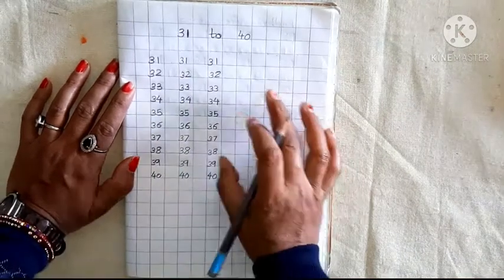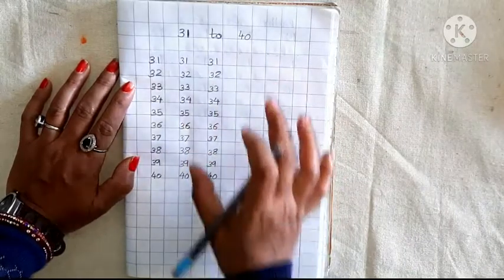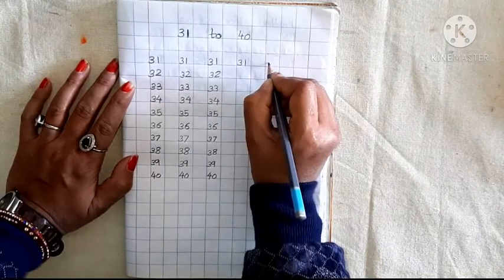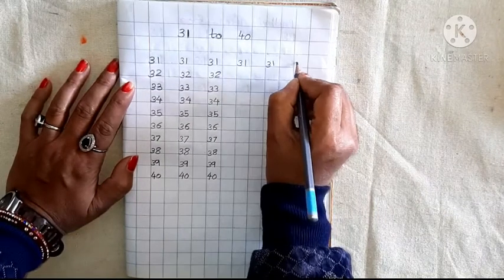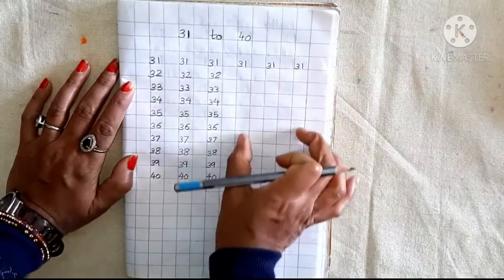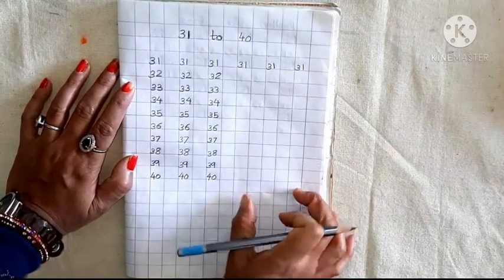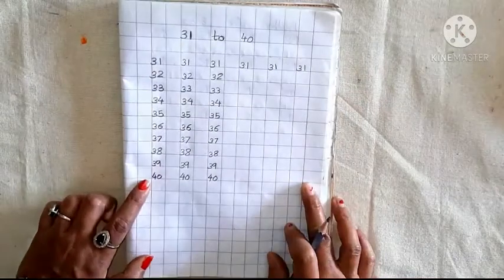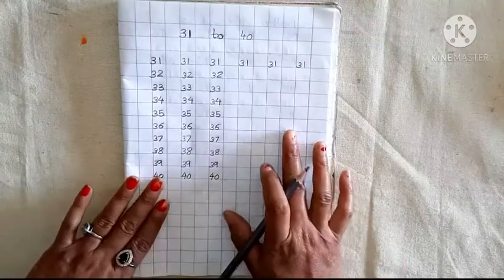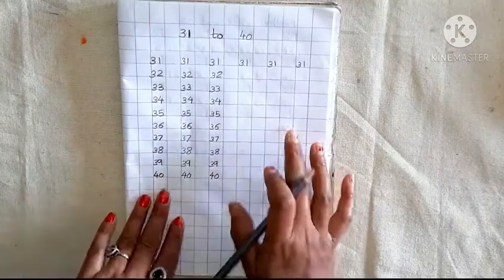मैडम ने कैसे लिखा? वैसे ही आपको लिखना है, Okay? मैं यहाँ पर फिर से 3, 1, राइट करती हूँ, देखो. यहाँ पर मैंने 3, 1. राइट किया ना? 3, 1, 31. तो यहाँ पर आपको 3, 1, 31 की लाइन लिखनी है, Okay? कैसे लिखना है? Top to bottom. पूरा पेज आपको लिखना है, यहाँ पर देखो, मैडम ने लिखा है न, वैसे ही आपको लिखना, Okay? Okay?